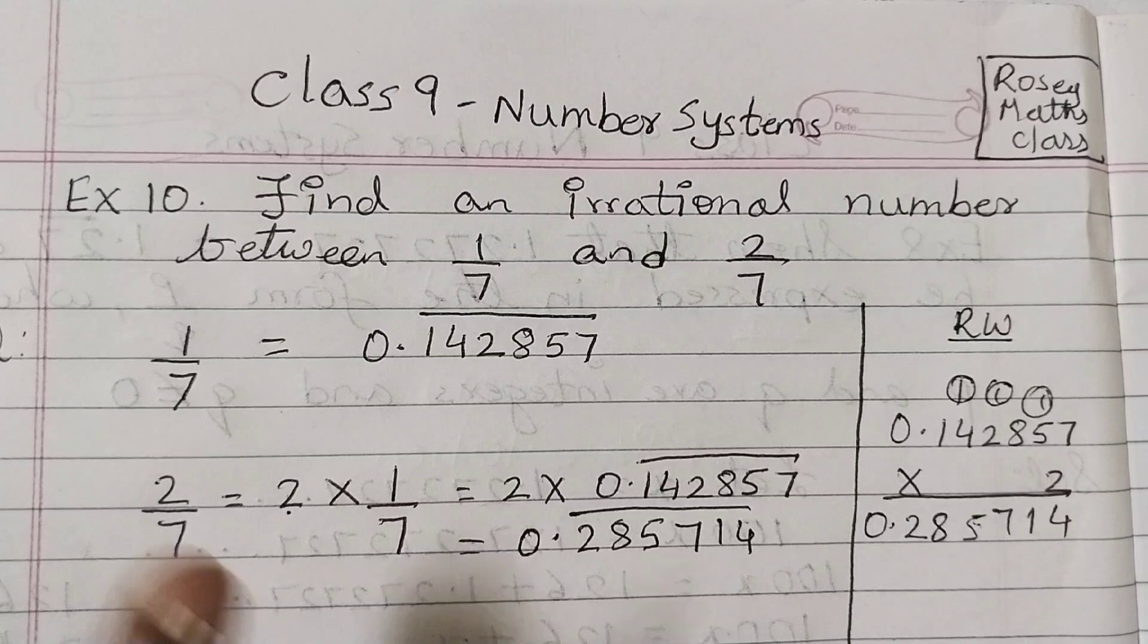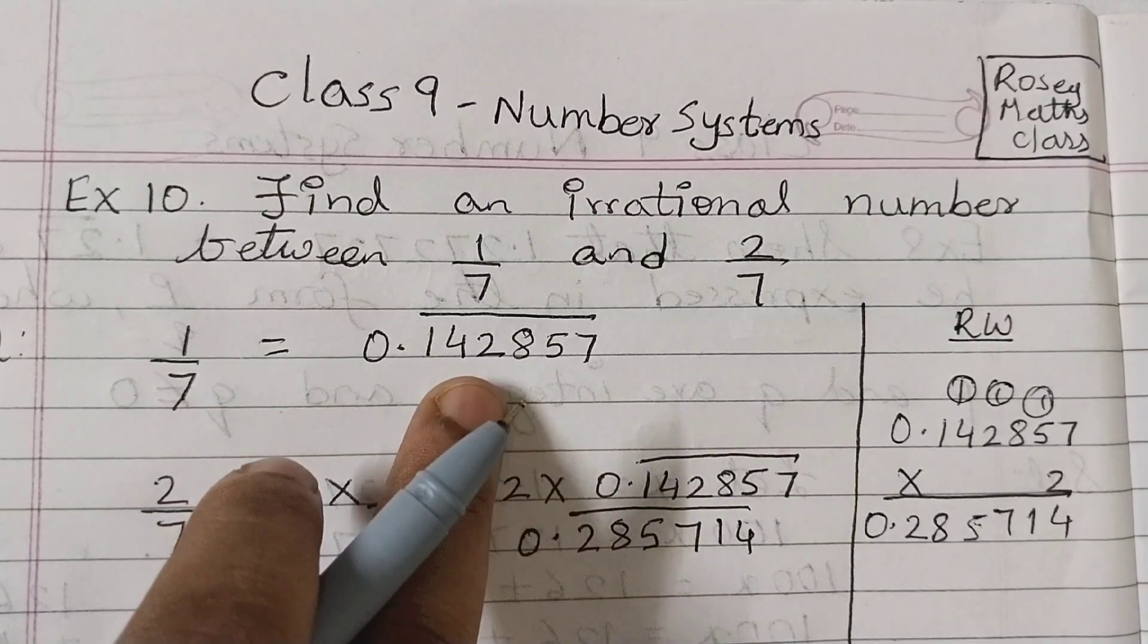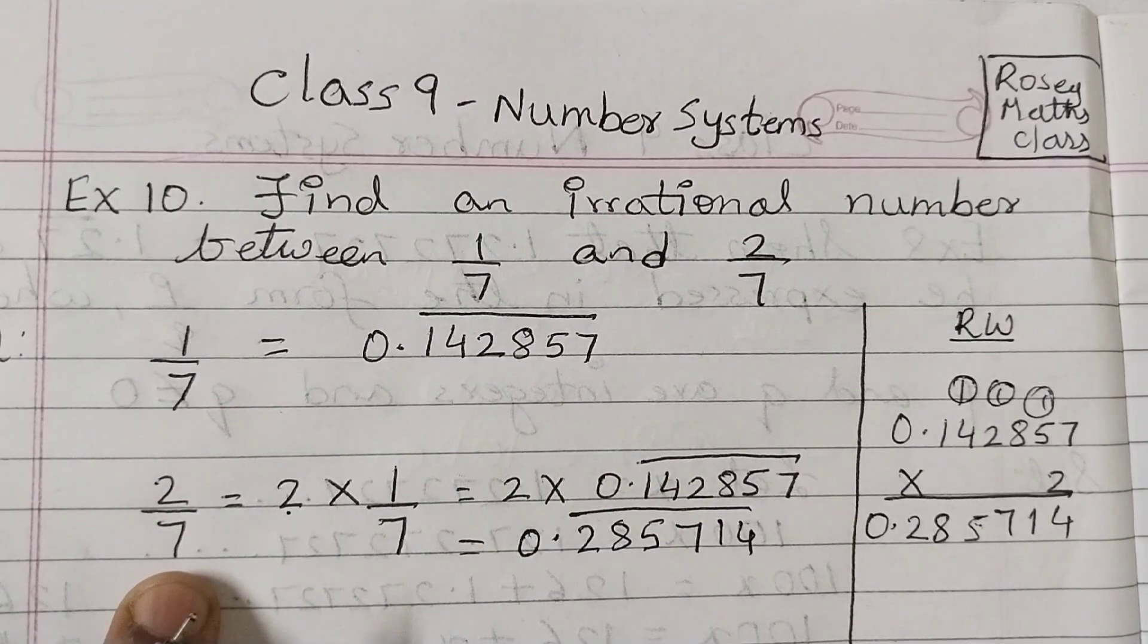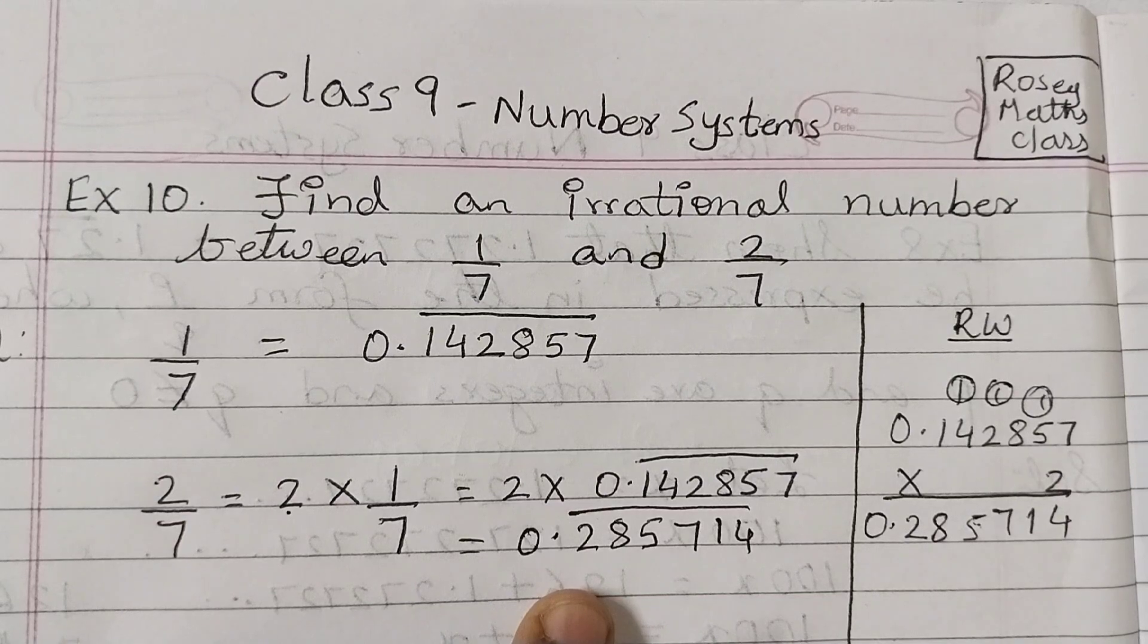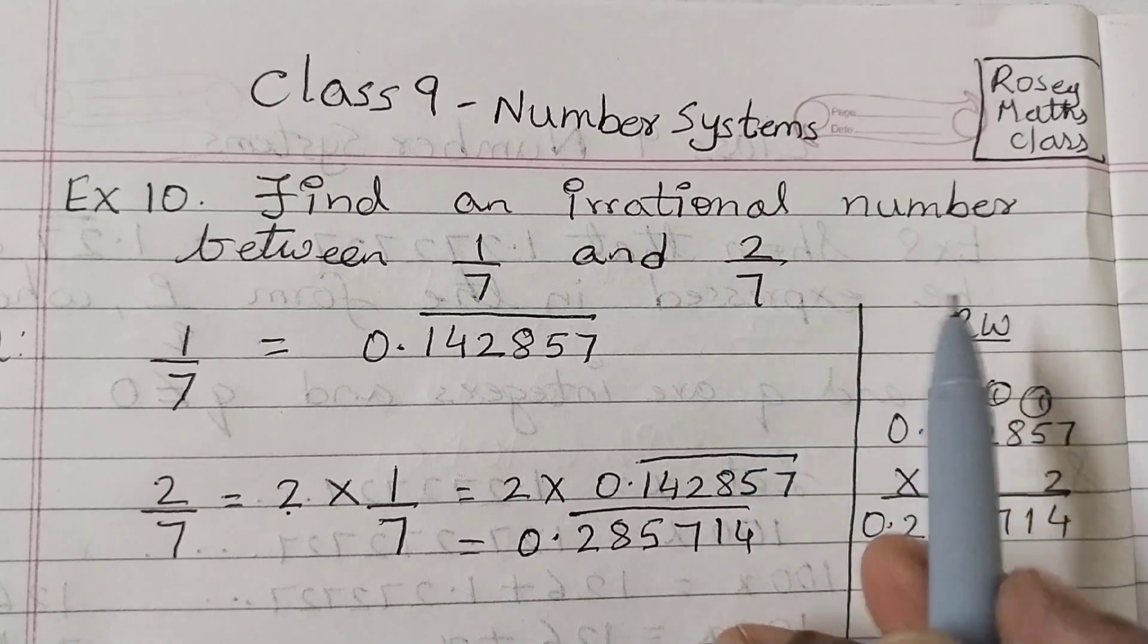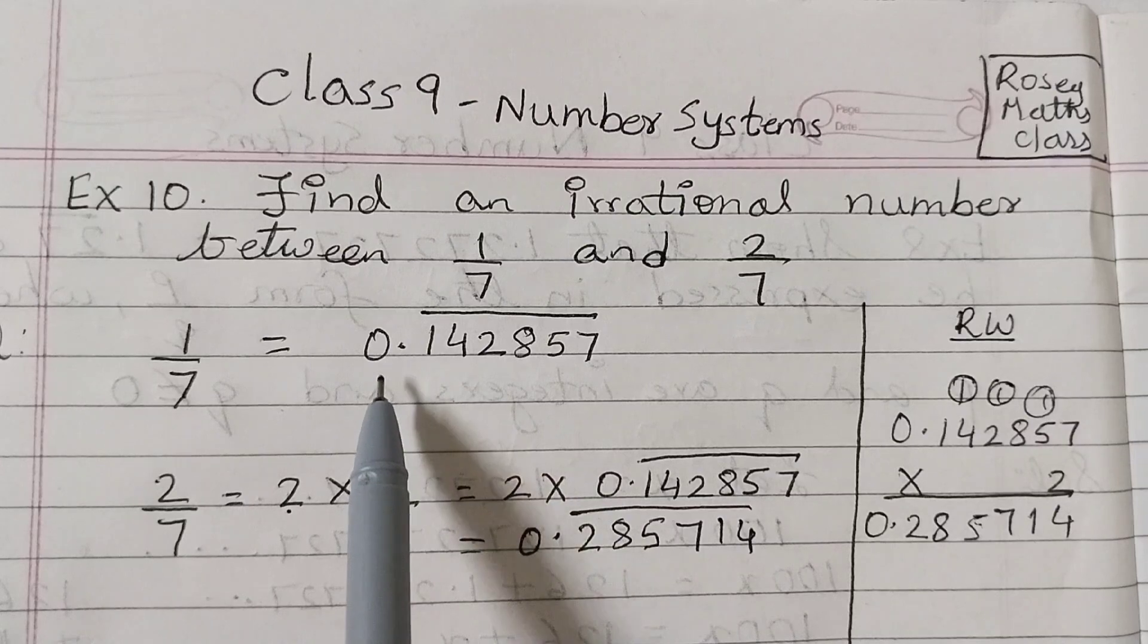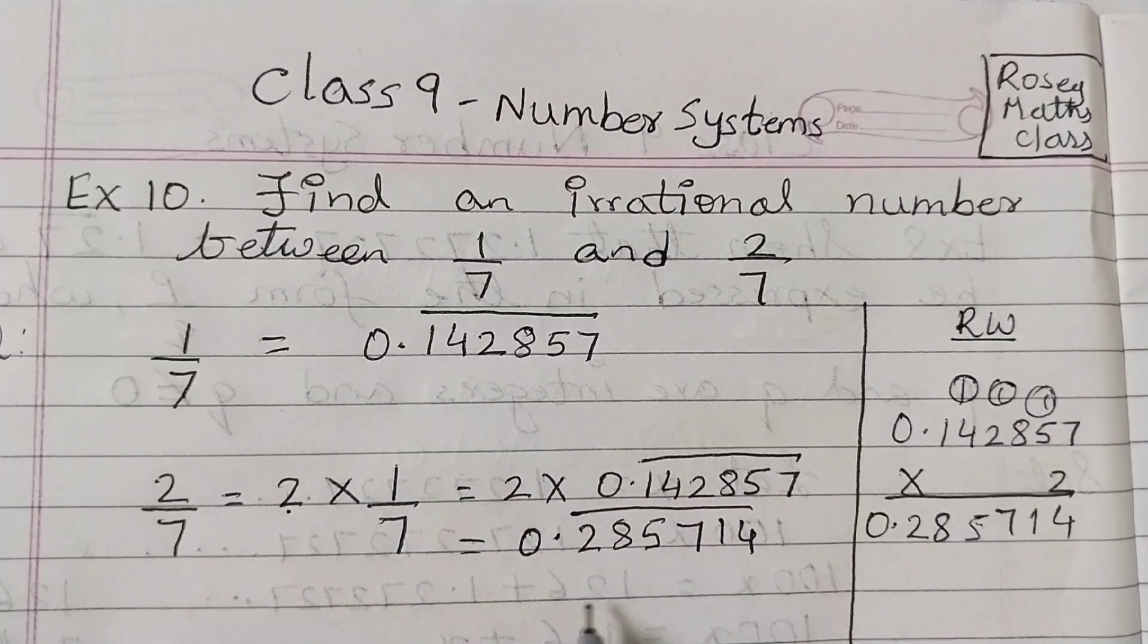So this is 1 by 7 decimal expansion and this is 2 by 7 decimal expansion. Now we need to find an irrational number between these two. So if you take this as 0.14 and this as 0.28, so 1 4 and 2 8, 14 and 28, you can have infinitely many irrational numbers